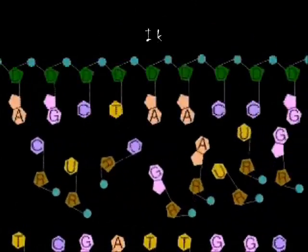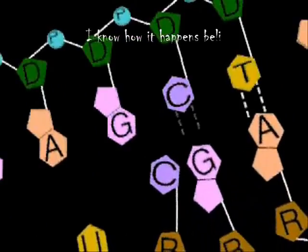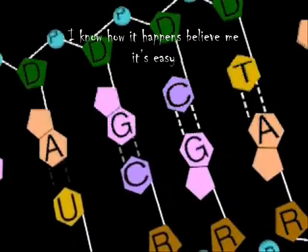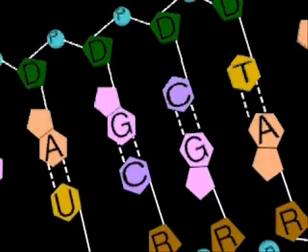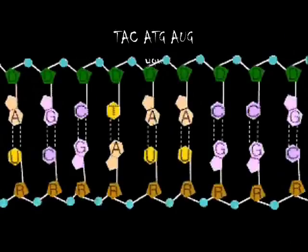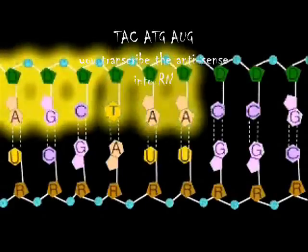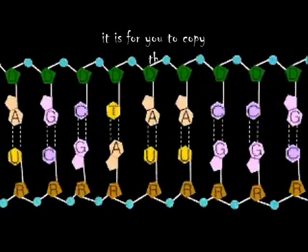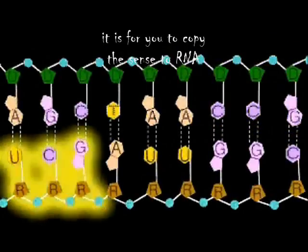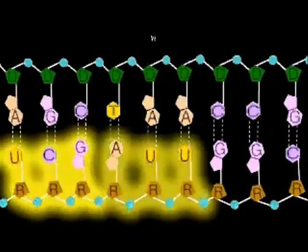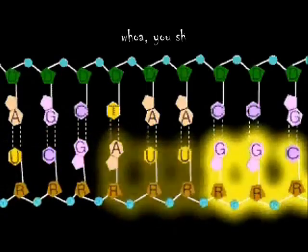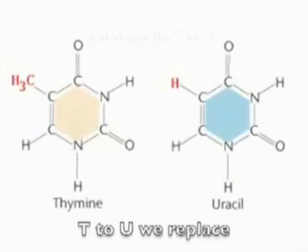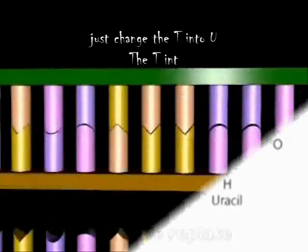I know how it happens, believe me, it's easy. T-A-C-A-T-G-A-U-G — just gave the template sense strand into RNA. For you to copy the sense to RNA, just change the T into U, the T into U.